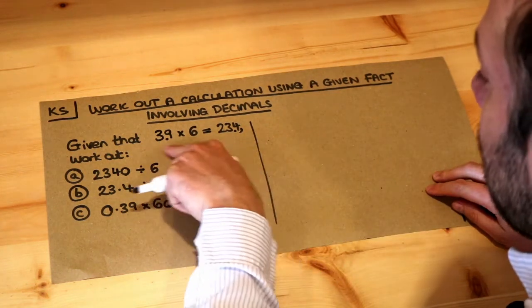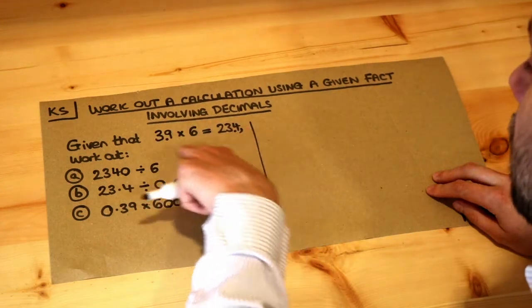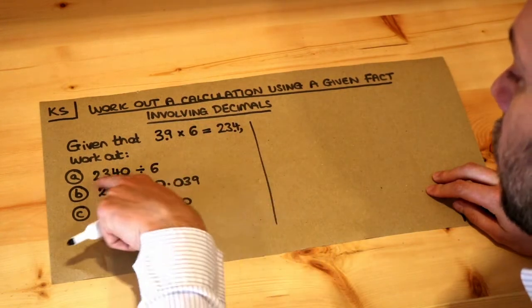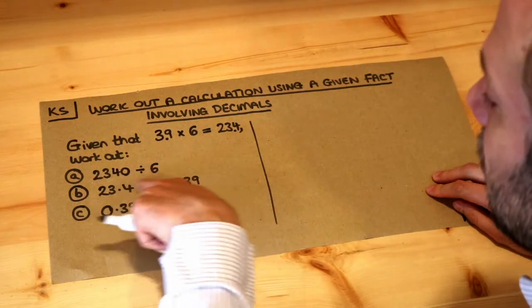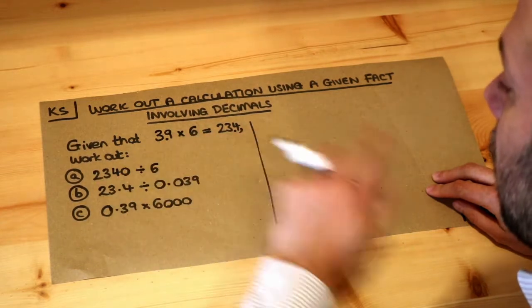So we're told that 3.9 times 6 is 23.4, and we have to use this fact to work out these other calculations. We don't want to try and work these out directly; we want to somehow use this to instantly get the answer here.